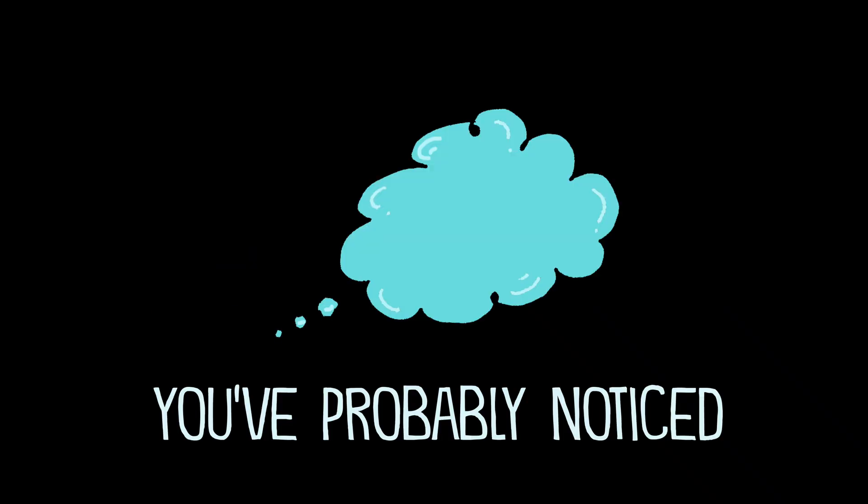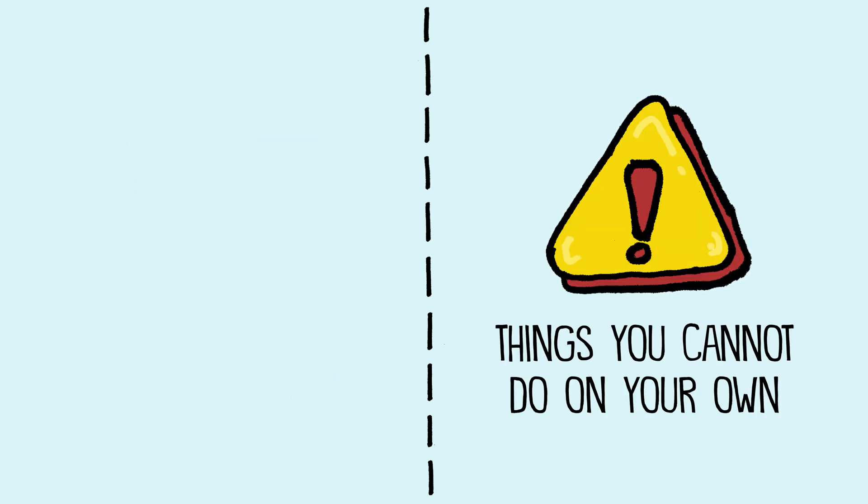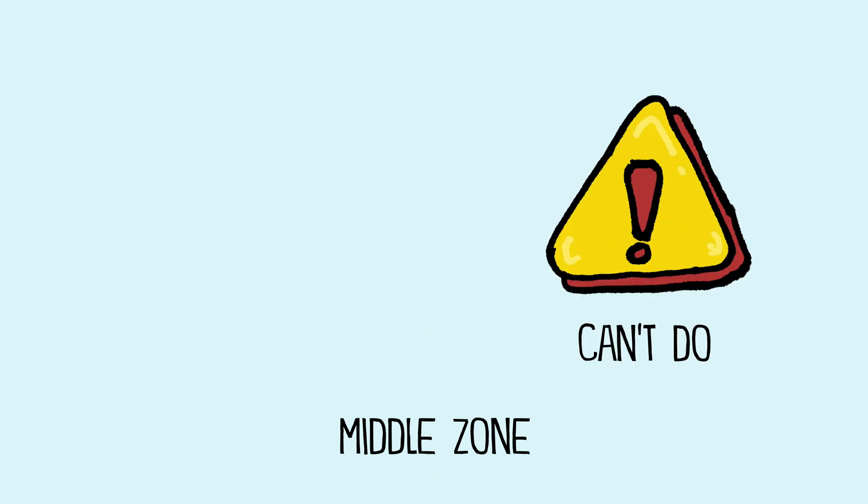You've probably noticed that there are things you can do on your own and things that are impossible to do, but there are also certain things in a middle zone that you can't do on your own quite yet, but you can accomplish with a little bit of help.